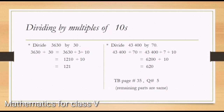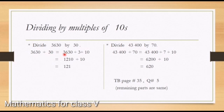Now, dividing by multiples of tens. We learned in a previous video what multiples of 10 are. In this section, we divide numbers by multiples of 10. This is question number five from textbook page 35. First part: divide 3,630 by 30. We write it as 3,630 divided by 3, divided by 10. We split 30 into 3 and 10. First we divide 3,630 by 3, which gives 1,210, then divide by 10, removing one zero, giving the answer 121.